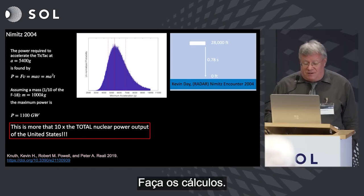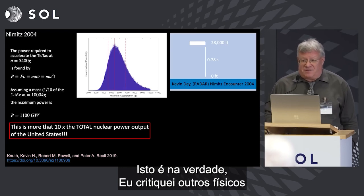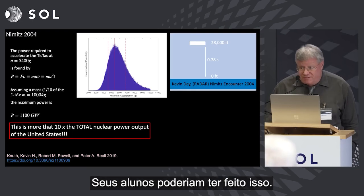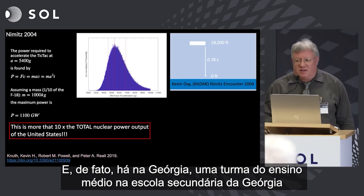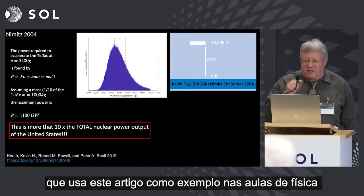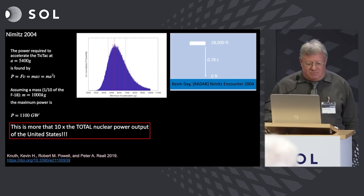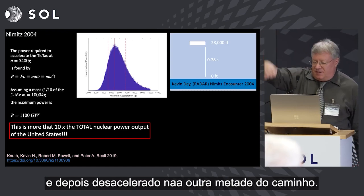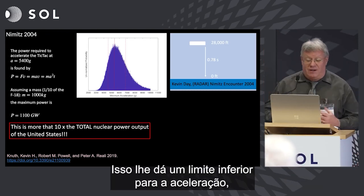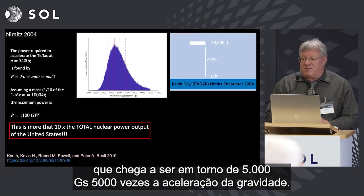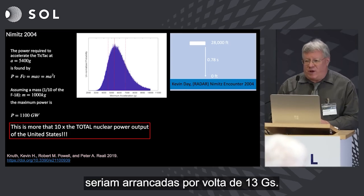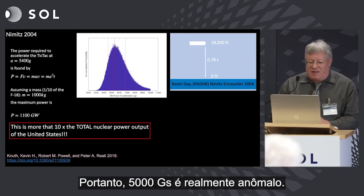How anomalous? Do the math. I've criticized other physicists who said the analysis was rather simple — and my response was, yes, you should have done it. Your students could have done it. In fact, there was a high school physics class in Georgia that used this paper as an example of how to make estimates of kinematics. You can estimate the minimum acceleration, which comes from the object accelerating halfway and then decelerating the other half. That gives a lower bound of around 5,000 g's — 5,000 times the acceleration of gravity. People aren't going to survive this. Most equipment won't survive this. An F-35's wings will rip off at about 13 g's. So 5,000 g's is really anomalous.